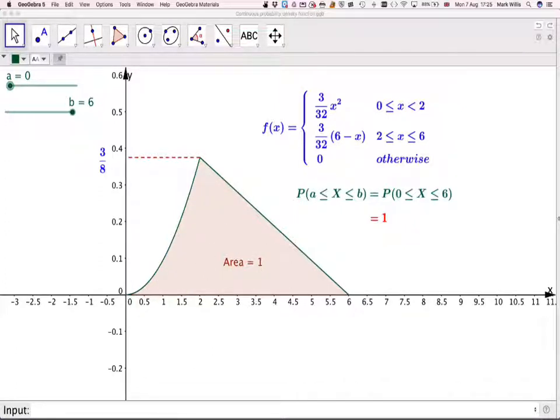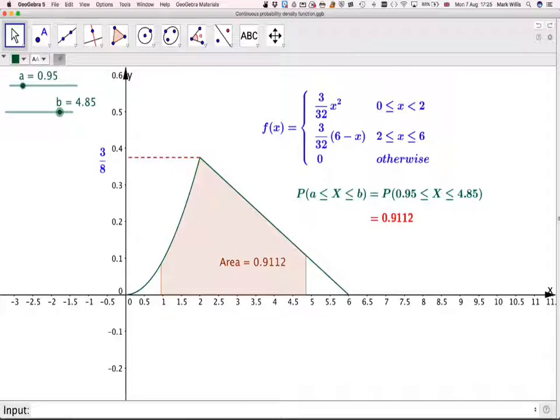And we've got the piecewise function written out there and the area will be equal to 1. So what this GeoGebra applet does means that you can move A and B to find some probabilities. So later we're going to have to do the probability between 1 and 3, and we're going to do it algebraically, but the graph will look like that. And we'll have to see that we have to integrate between 1 and 2 and then 2 to 3 of the other function.